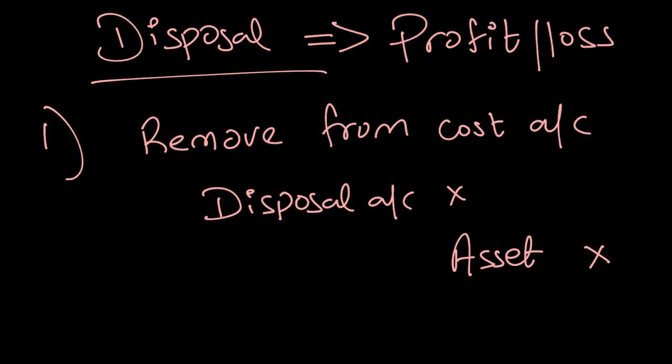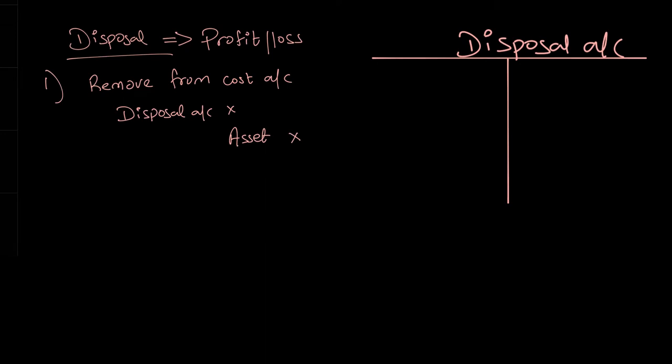The first step is to remove it from the cost account. I'll also draw the disposal account simultaneously. On the debit side of this account you can record the original cost of the asset. That's the first step.